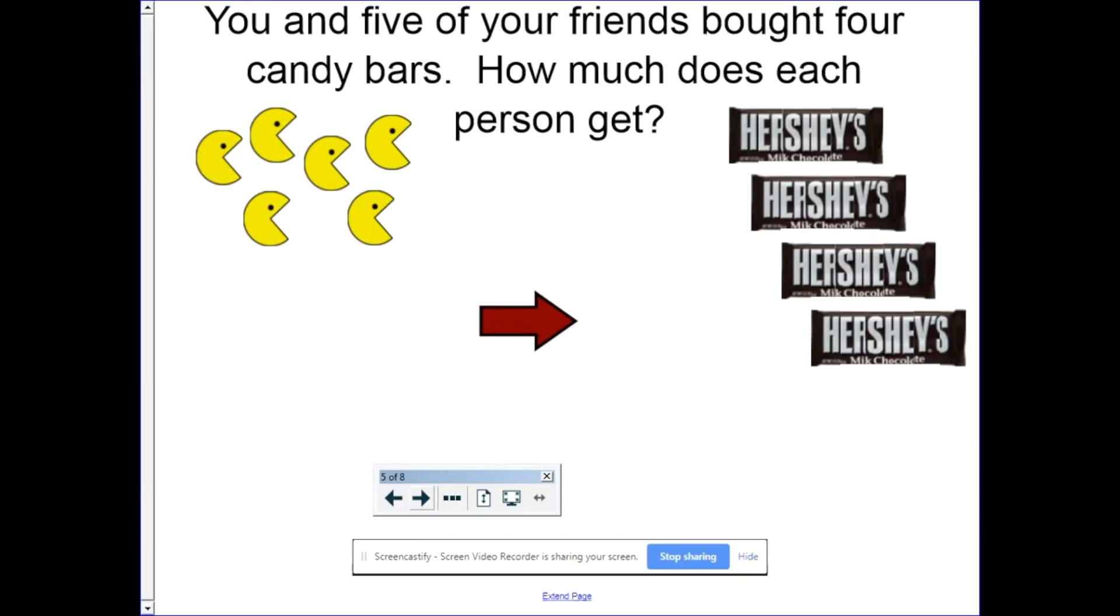What if it's you and five friends, and you bought four candy bars? How much does each person get? Well, there's one, two, three, four candy bars, and it's being split between six people. Four divided by six. So by this logic, each person should get four-sixths of a candy bar.